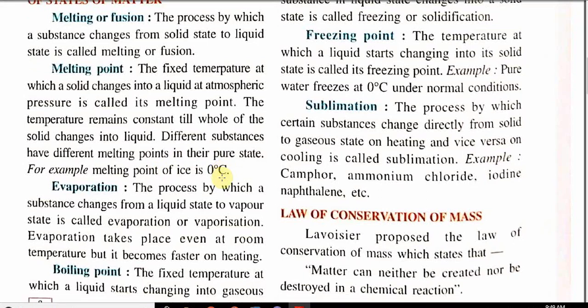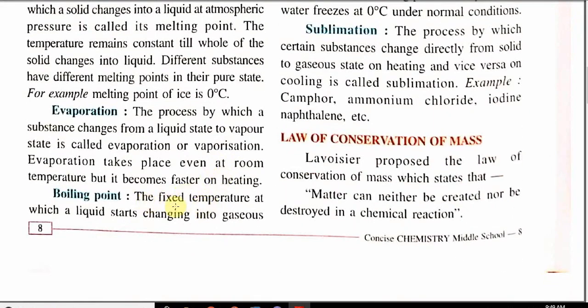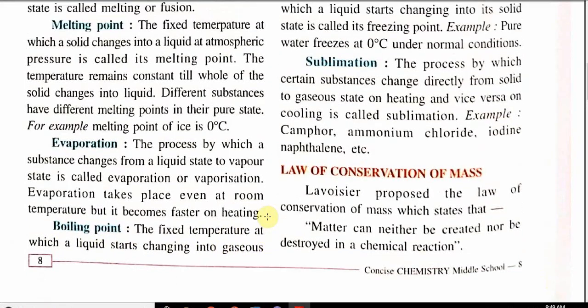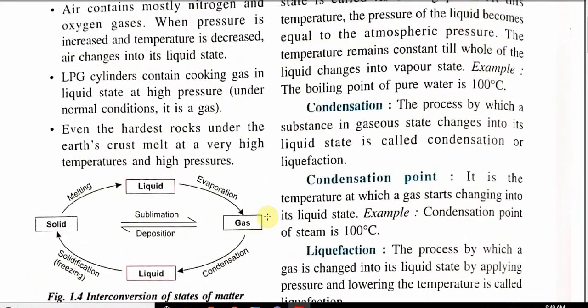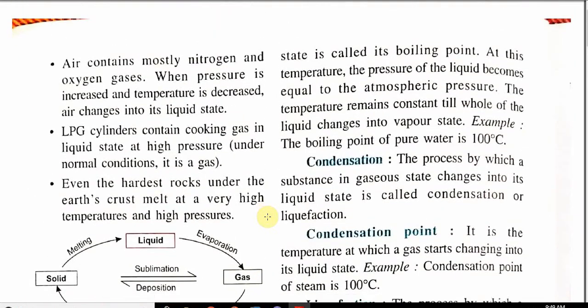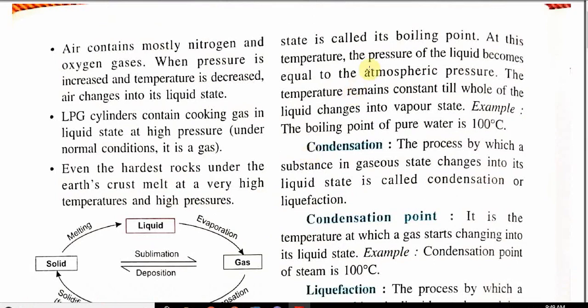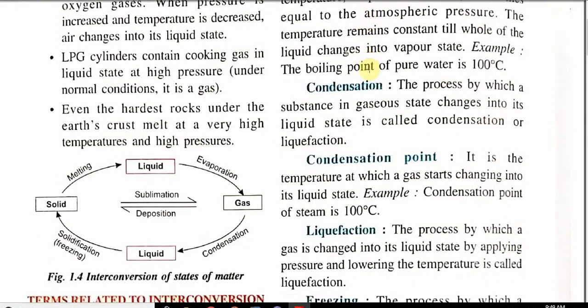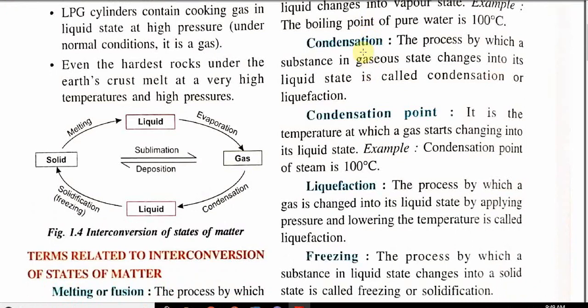Similarly for evaporation there is a boiling point. Look at the cursor left hand side of your screen. Boiling point is a fixed temperature when liquid starts to change into gaseous state. All the temperatures are fixed for a particular thing and if the substance is pure it will always be constant. If impurities are mixed in certain substances all the points of temperature will change.